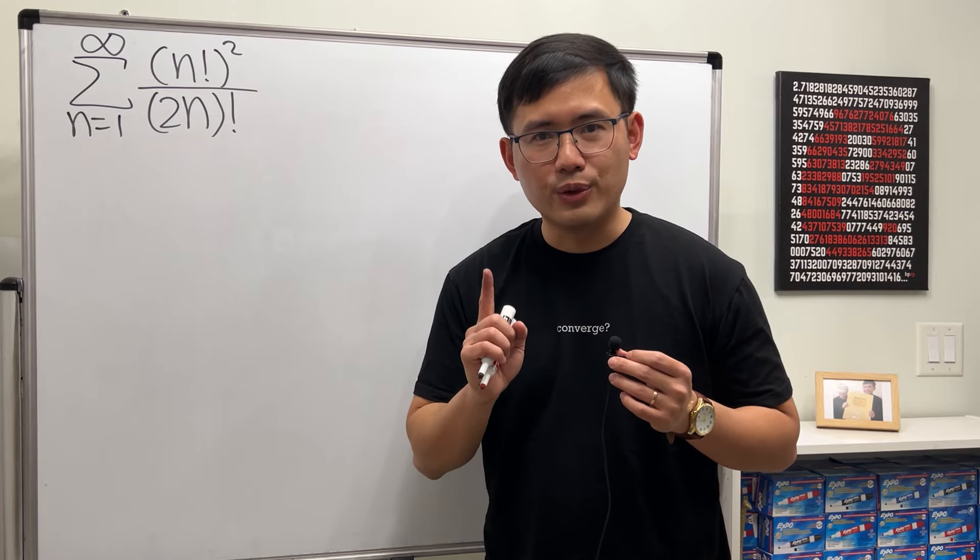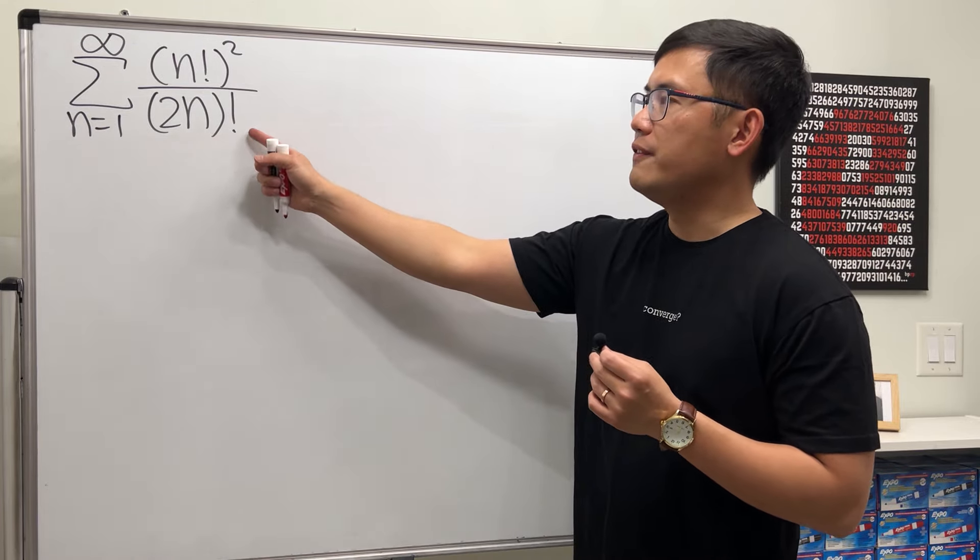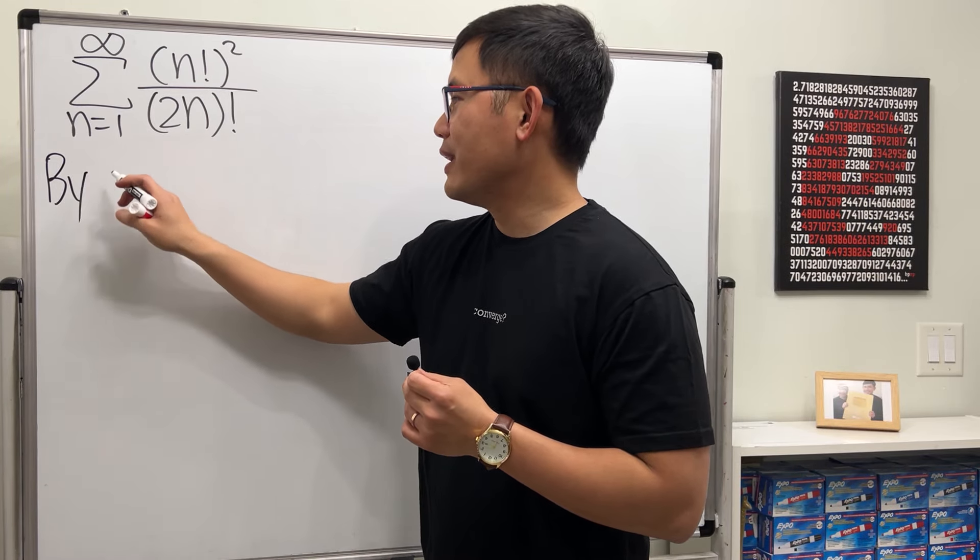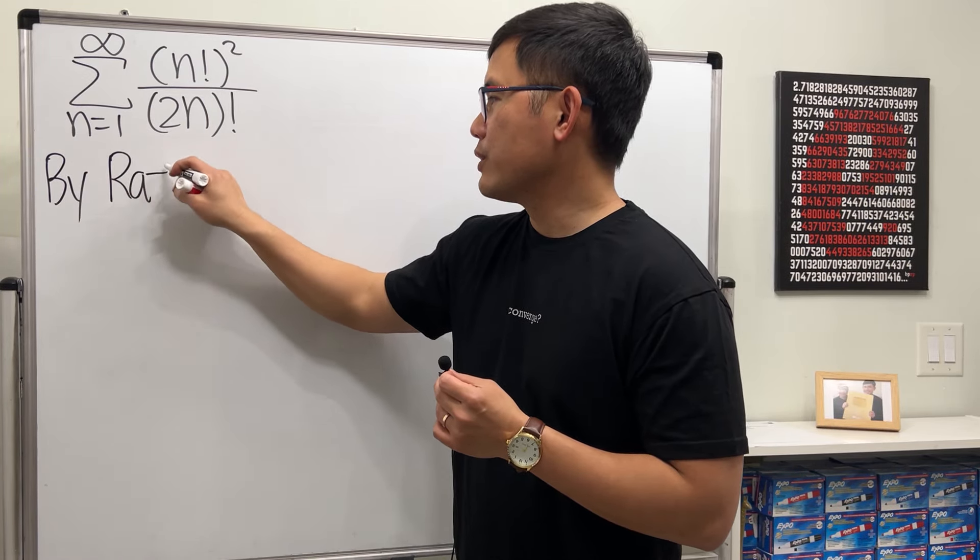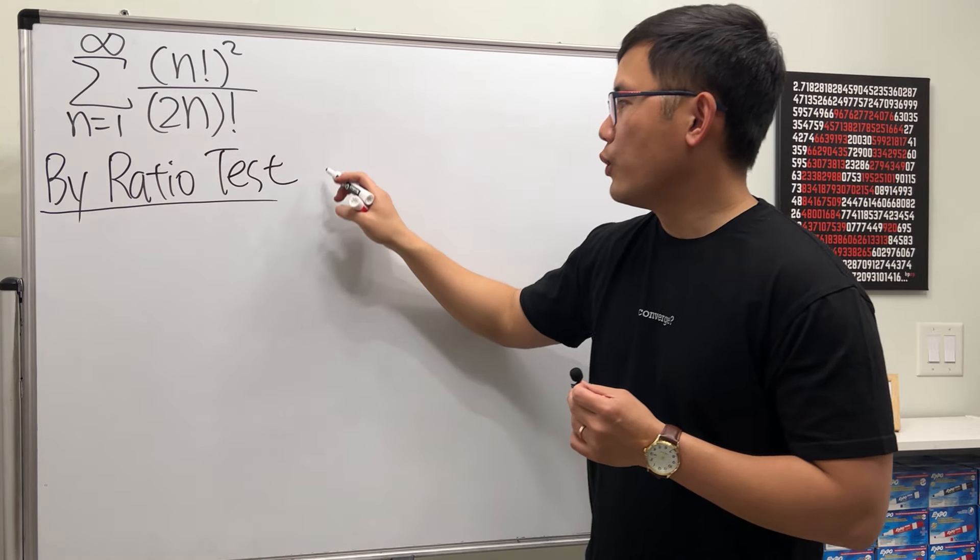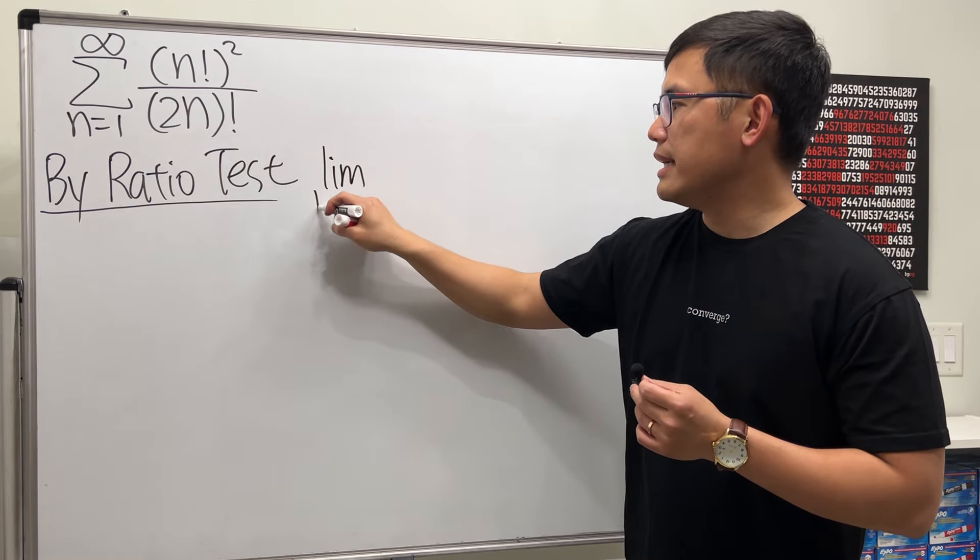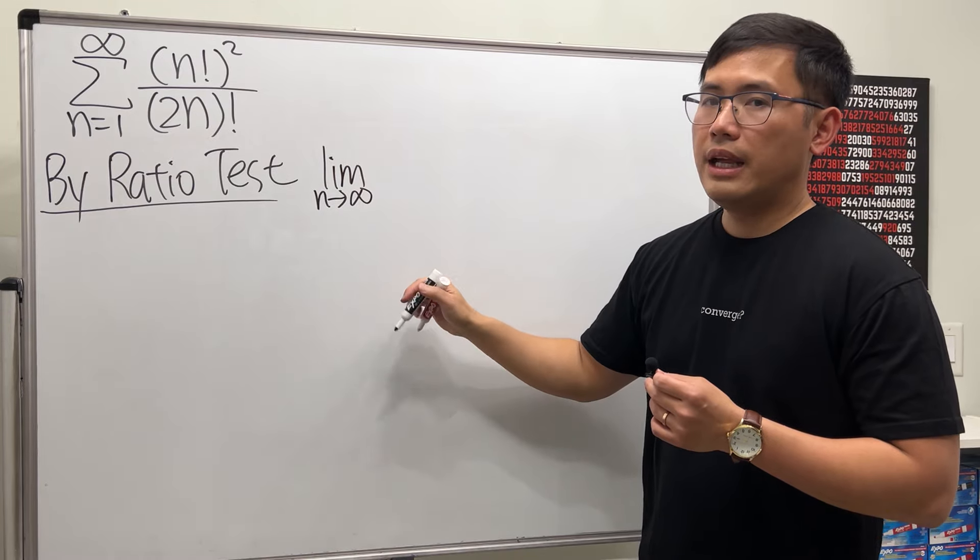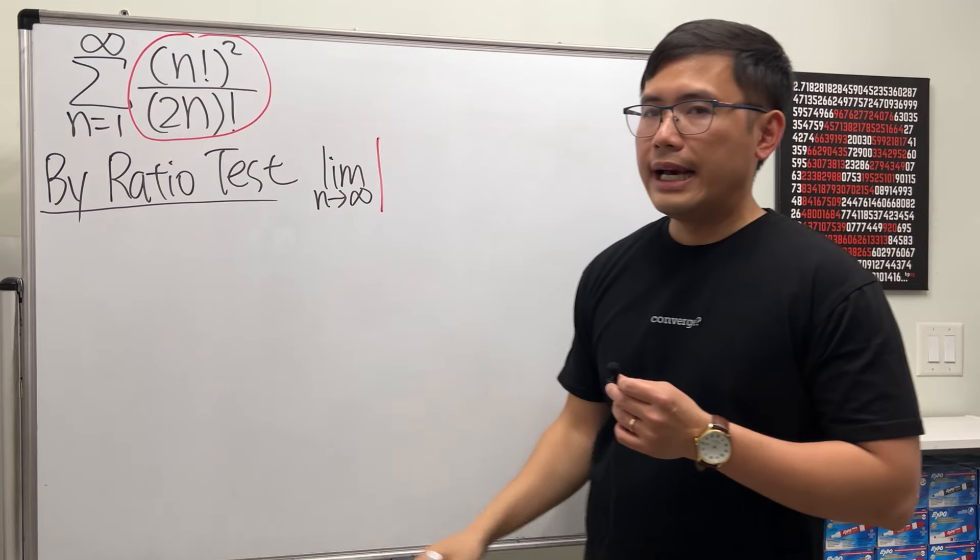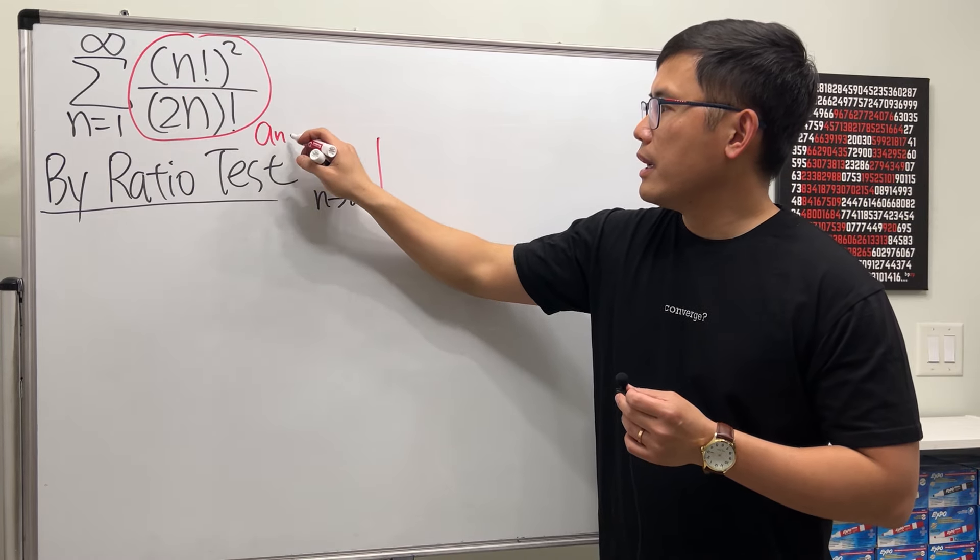So here we go, let's just go ahead by using the ratio test. And for the ratio test we are going to first check the limit as n goes to infinity, and then we put down the absolute value. This part right here is our a_n, and then we would just have to do a_(n+1) over a_n.